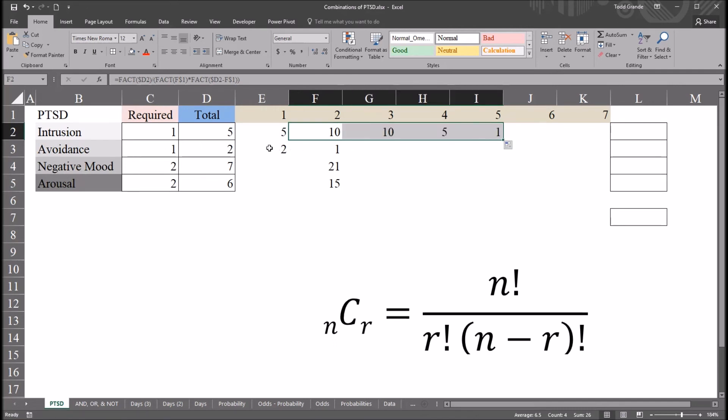For avoidance, I don't need to auto fill this anymore. You just have one and two. That's all we have here. Just two symptom criteria under the avoidance category.